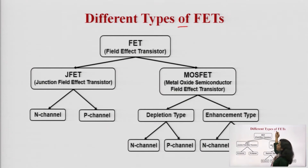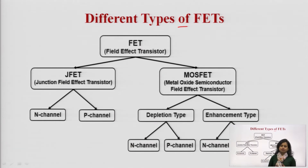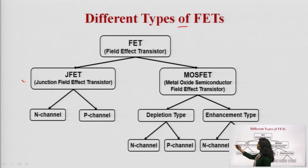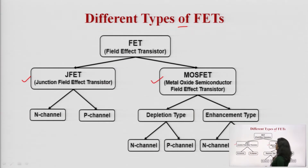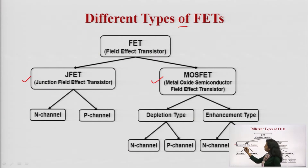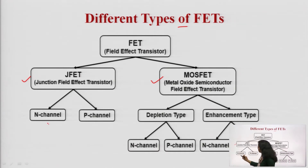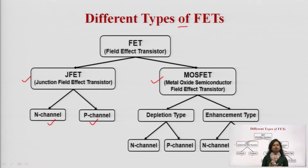First are the different types of FETs. FET is Field Effect Transistor, and Field Effect Transistors are of two types. One is Junction Field Effect Transistor and the other is Metal Oxide Semiconductor Field Effect Transistor. Junction Field Effect Transistors are again of two types: N-Channel and P-Channel, depending upon the availability of the channel.